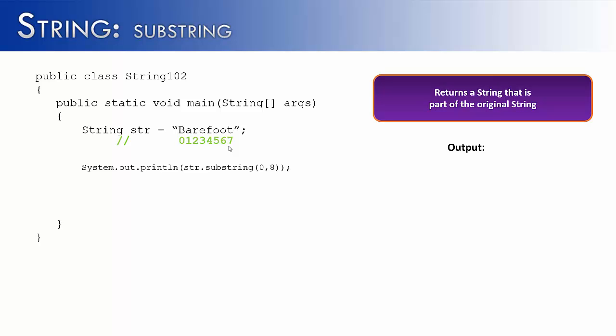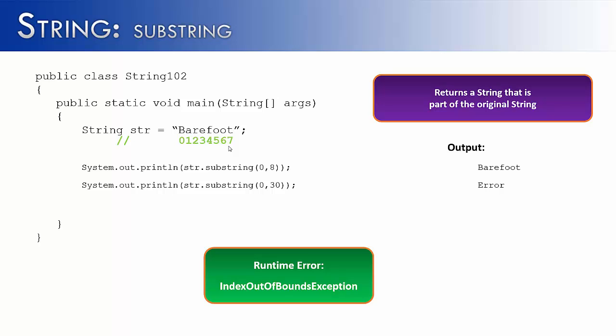I have a few more examples that I want to show you with the method substring. Let's see what happens if I'm using barefoot and I start at 0 and go to 8. That would give me the entire word barefoot. Next, what if I said 0 to 30? Hopefully you can see there's a problem with this in that there is no 30th index. And this would produce an error. It wouldn't give you a compile error, but a runtime error, because it would happen when you run the program, because 30 is definitely out of the range of 0 to 7.